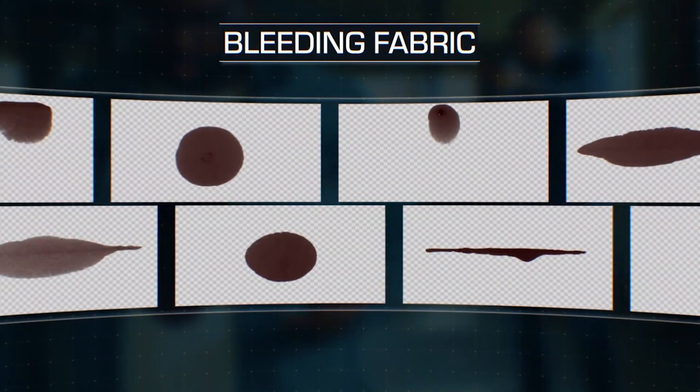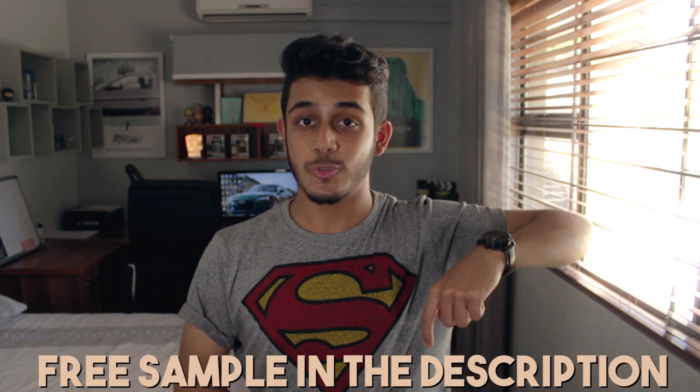ActionVFX have come up with a brand new collection of blood fabric assets. Back when I was doing that short film, what I did to make it seem as if his shirt was bloody was I basically animated a red solid on top of the shirt. That can look a bit funky, but with these brand new blood fabric assets you can get nice and super close, composite that on top of a shirt. For today's tutorial we're going to be using an asset from ActionVFX's blood fabric collection. If you have your own blood VFX fabric assets go ahead and use those, but if you don't, ActionVFX have been kind enough to provide a lower quality 720p version — a sample — which you can download in the description right now.